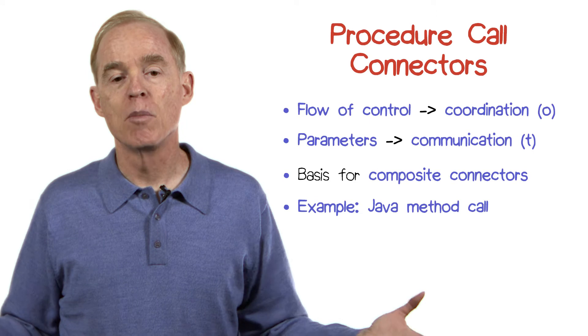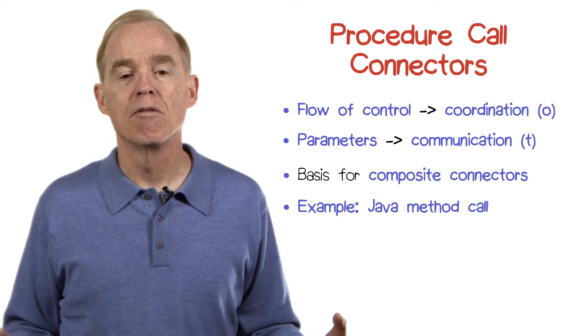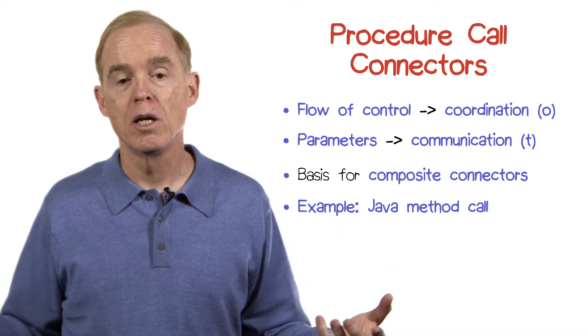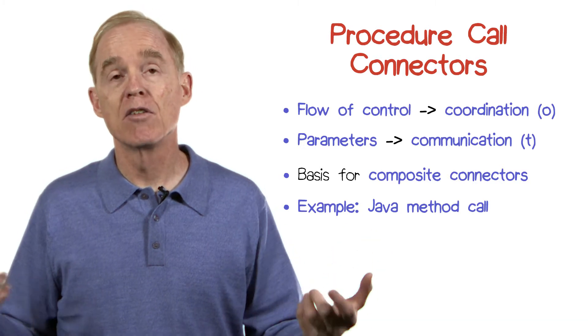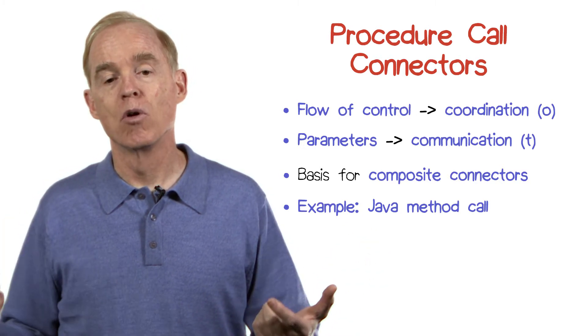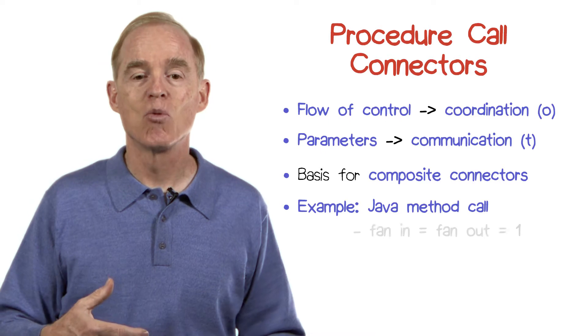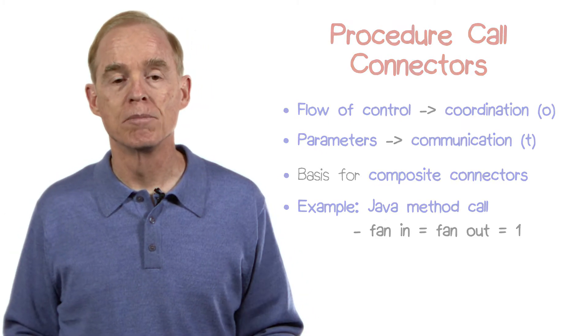For example, in the Java method call, we have the caller, the callee. There's exactly one caller and one callee at any given time, so we can say the fan in is one, the fan out is one as well. Sounds simple, right? But there's all kinds of variations.